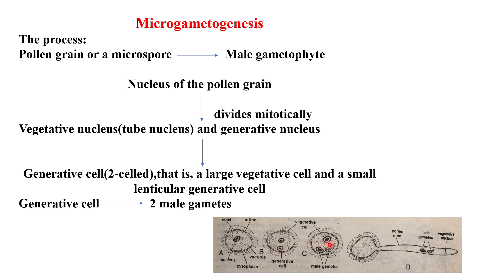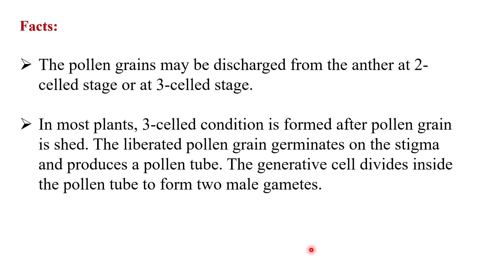At the two-cell stage, the pollen grains may be shed from the anther, but in some cases further division occurs. The generative cell then gives rise to two male gametes, forming the three-cell stage. The pollen grains may be discharged from the anther at the two-cell or three-cell stage. In most plants, the three-cell condition is formed after the pollen grain is shed. The liberated pollen grain germinates on the stigma and produces a pollen tube, inside which the generative cell divides to form two male gametes.